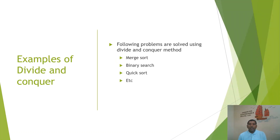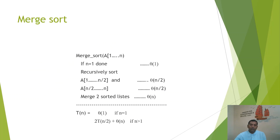There are many problems which are solved using the divide and conquer method, and we have already studied some of these algorithms. The examples are merge sort, binary search, quick sort, and many more. In merge sort, the main problem is divided into subproblems.